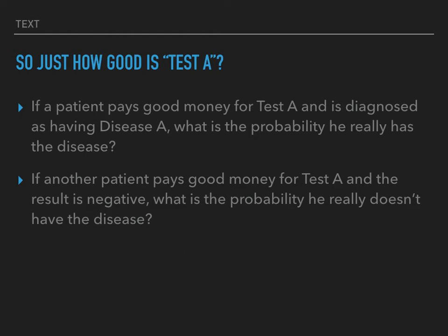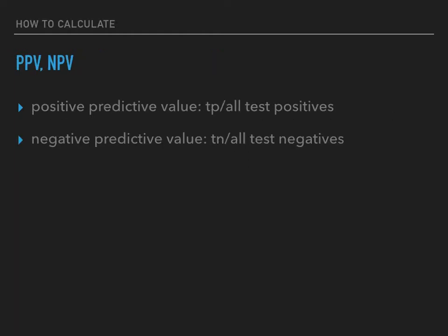My second question is: if some other patient pays good money for Test A and his result is negative, what is the probability that he really doesn't have that disease? To answer these questions, we have something called a positive predictive value and a negative predictive value. The positive predictive value is found by dividing the true positives by all the test positives. The negative predictive value is found by dividing the true negatives by all the test negatives.